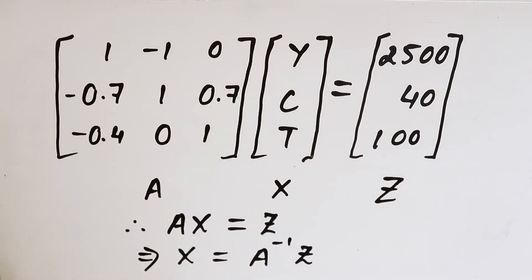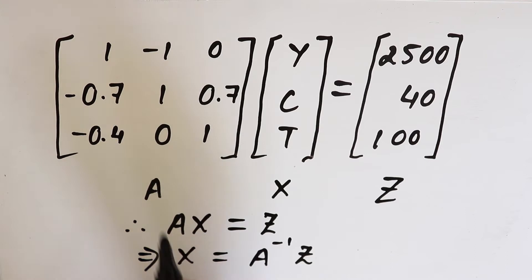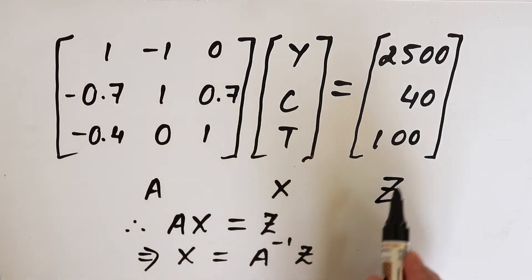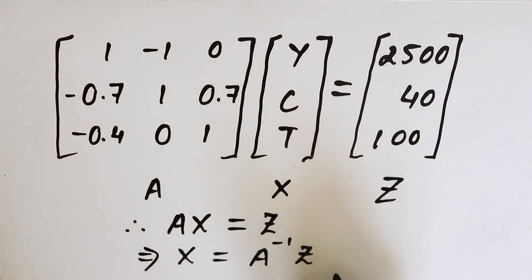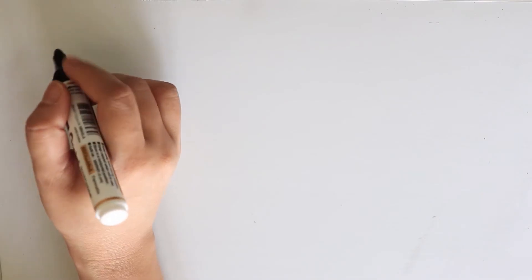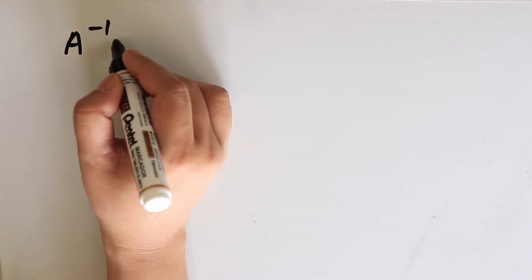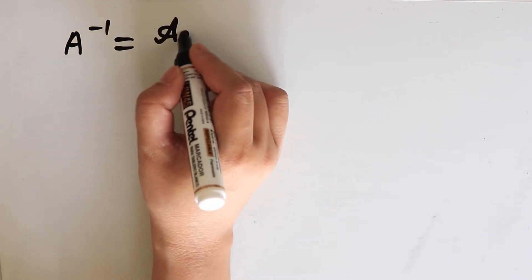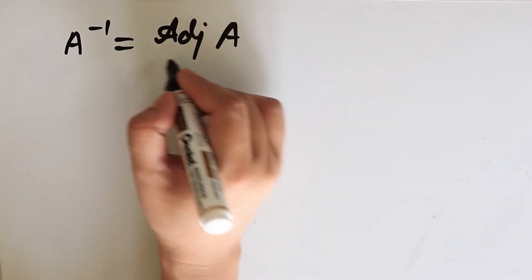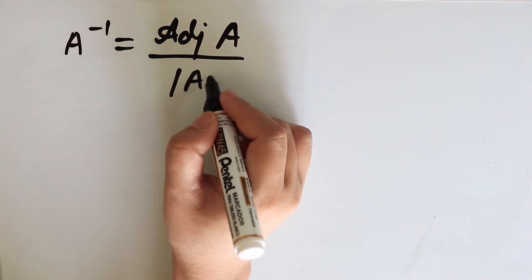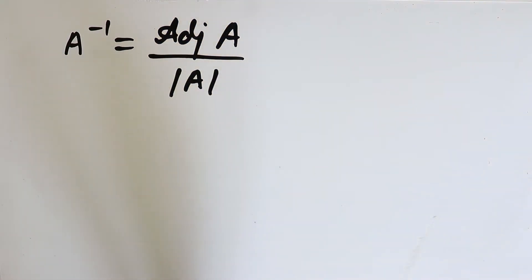X is a column vector of variables of order 3 by 1. A is a matrix of coefficients of order 3 by 3, and Z is a column vector of order 3 by 1. We can find the inverse of A by using the formula: adjoint of A divided by the determinant of A.